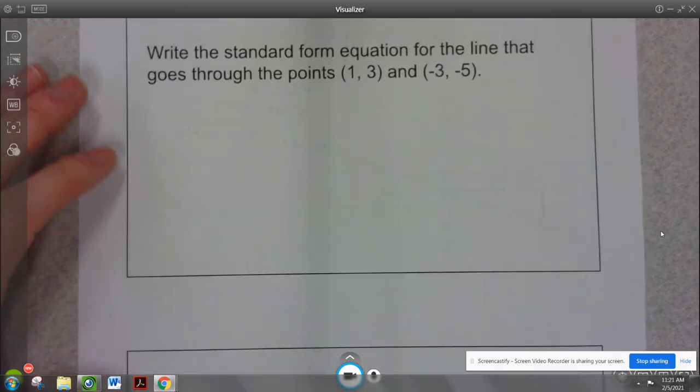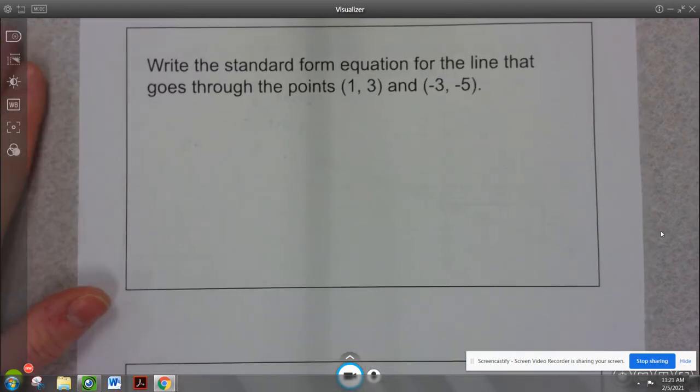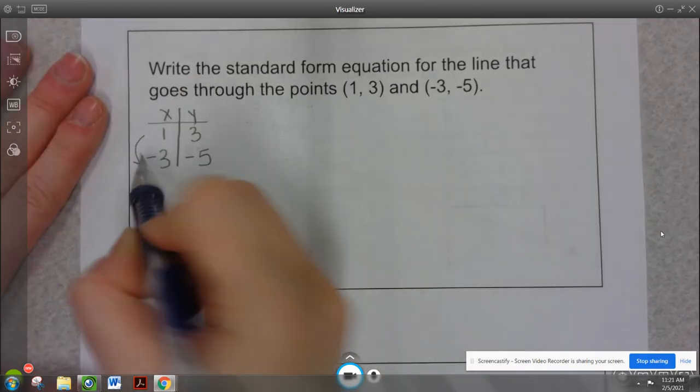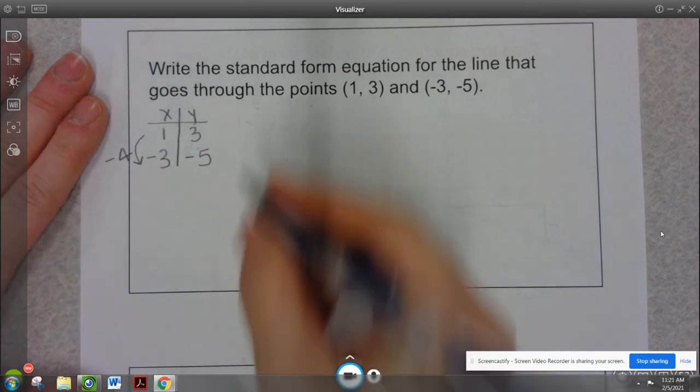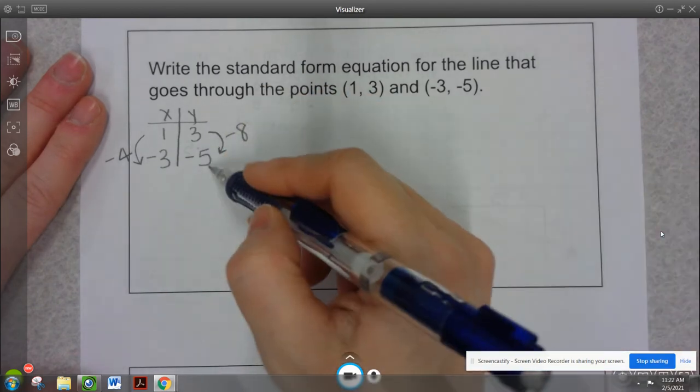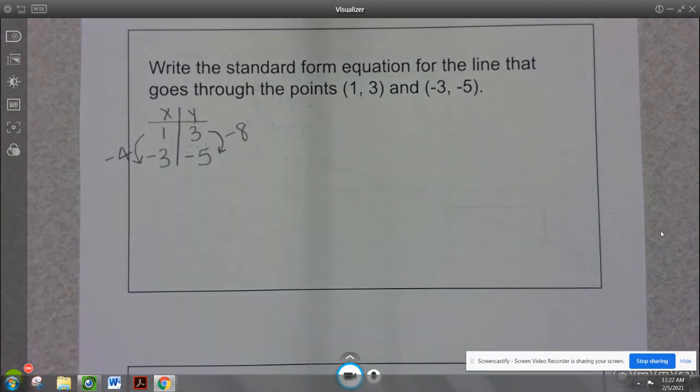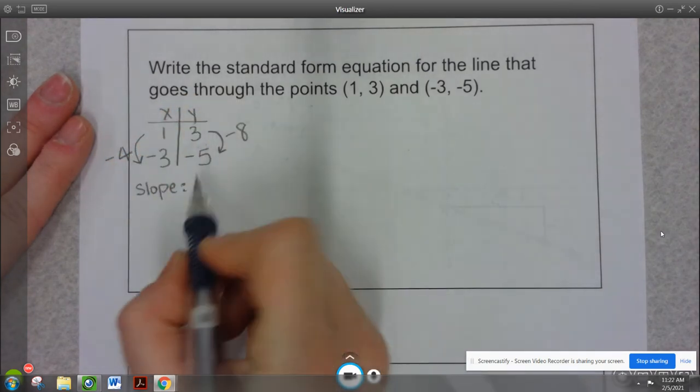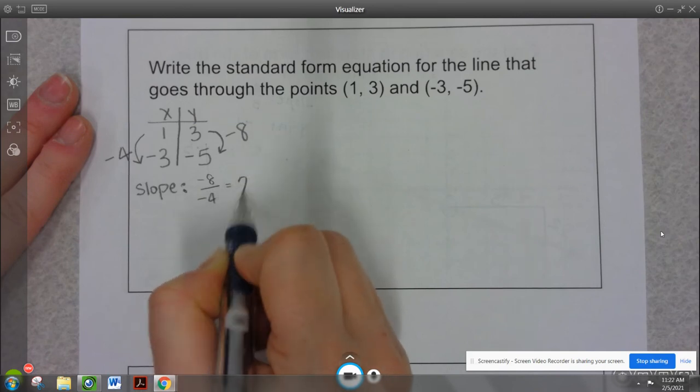All right. Same thing, except now I've been given 2 points. So before I can go anywhere, I've got to figure out the slope. I'm going to make myself a table. So from 1 to negative 3, I have to go down 4. And from 3 to negative 5, I have to go down 8. Now, if you had these two points the other way around in your table, that's fine. You would just see plus 8 and plus 4, which is still going to get us the same slope. Because negative 8 divided by negative 4 still gives me positive 2.